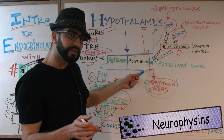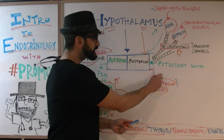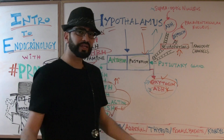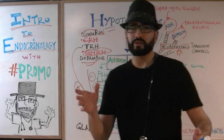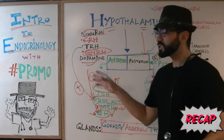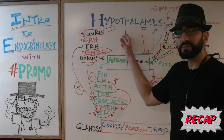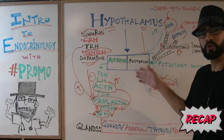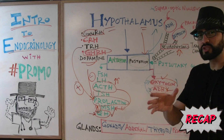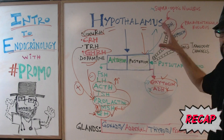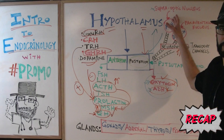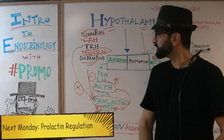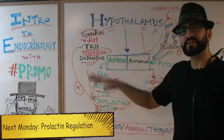In future lectures we'll discuss the importance of both oxytocin and antidiuretic hormone. Today was a good introduction to the endocrine system — we covered what is released from the hypothalamus, what hormones come from the anterior pituitary gland, what hormones come from the posterior pituitary gland, and the special consideration that two hormones are made in the hypothalamus and stored in the posterior pituitary.